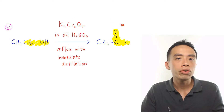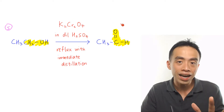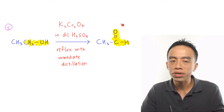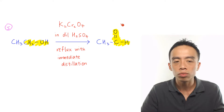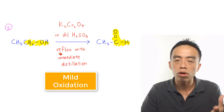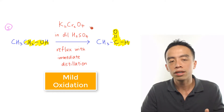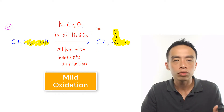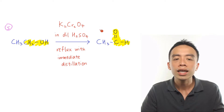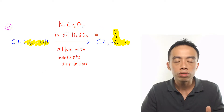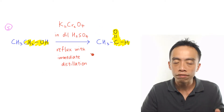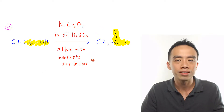Major reaction number 5 for primary alcohols is the controlled oxidation to form aldehydes. This is done using K2Cr2O7 in dilute H2SO4 with reflux and immediate distillation.